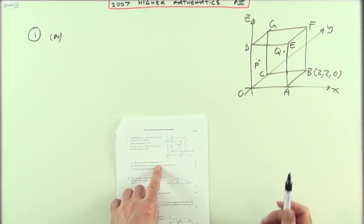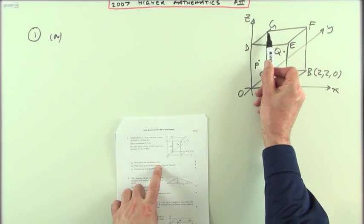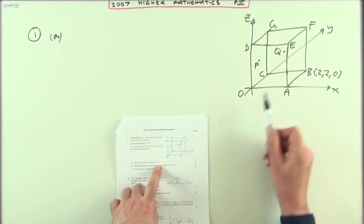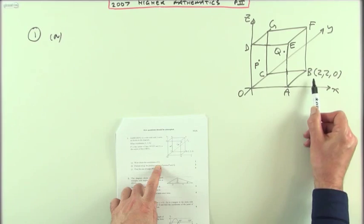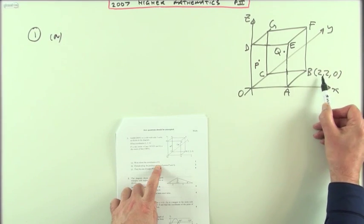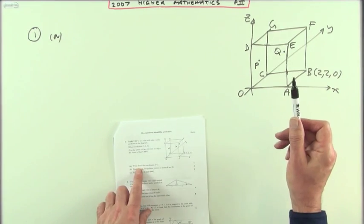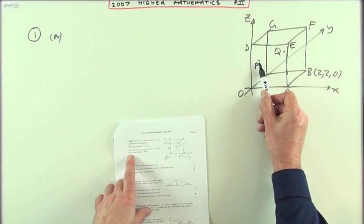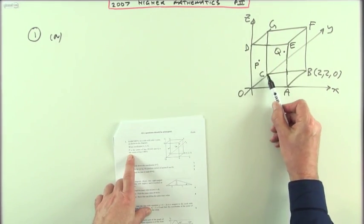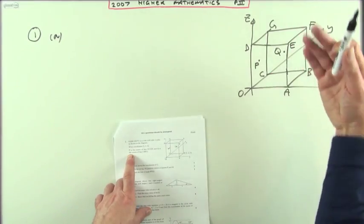Part A asks: What are the coordinates of vertex G in this cube of side two? There's a diagram verified by the coordinates of B with two for the distance along and back, where P is the center of the left hand face OCGD and Q is the center of the back face CBFG.